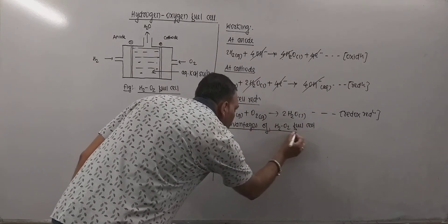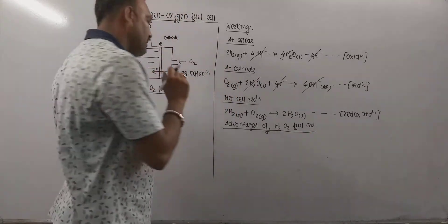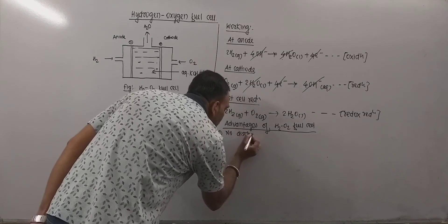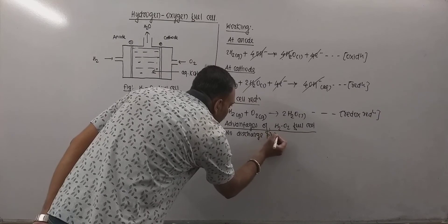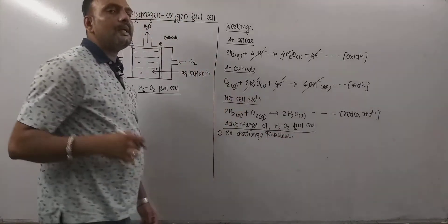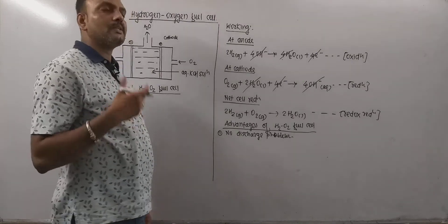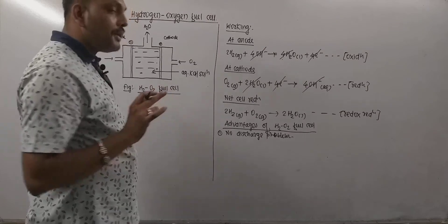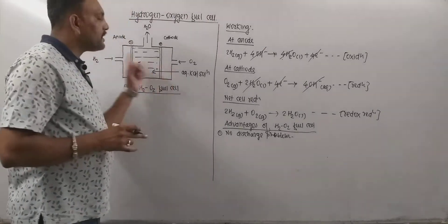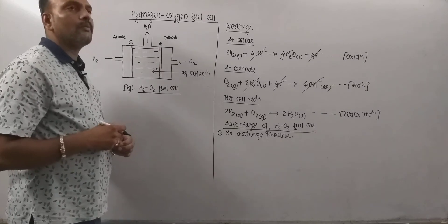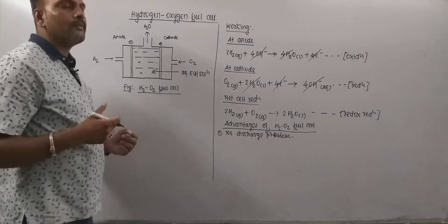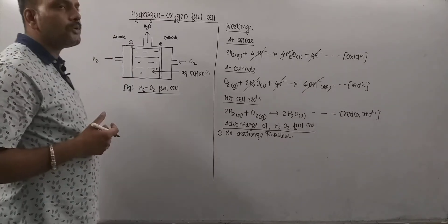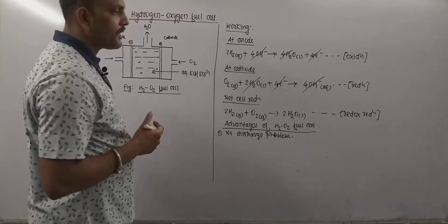Now advantages of H2O2 fuel cell. So big advantage of this is there is no discharge problem. I mean, due to continuous feeding, continuously cell works and produces electricity. It never undergoes discharge. If the supply of these gases stops then no doubt cell stops working. But if at all we are supplying these gases continuously, then continuous production of electricity can be expected from it.